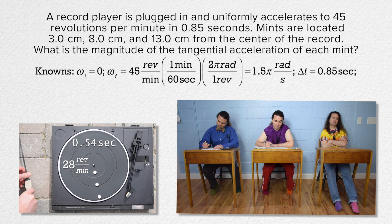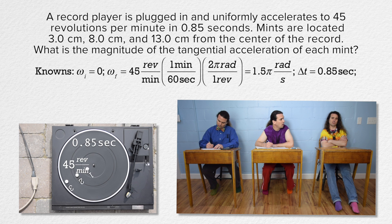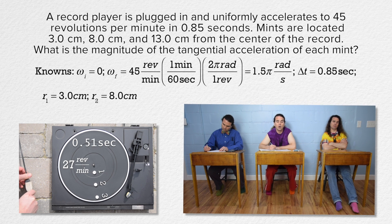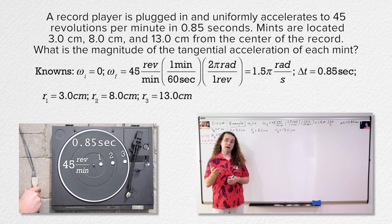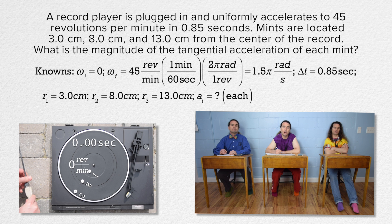Mints are located 3.0 centimeters, 8.0 centimeters, and 13.0 centimeters from the center of the record. Let's label the three mints 1, 2, and 3. The radii of the paths of the three mints are 3.0, 8.0, and 13.0 centimeters. What is the magnitude of the tangential acceleration of each mint? Tangential acceleration equals question mark for all three mints.